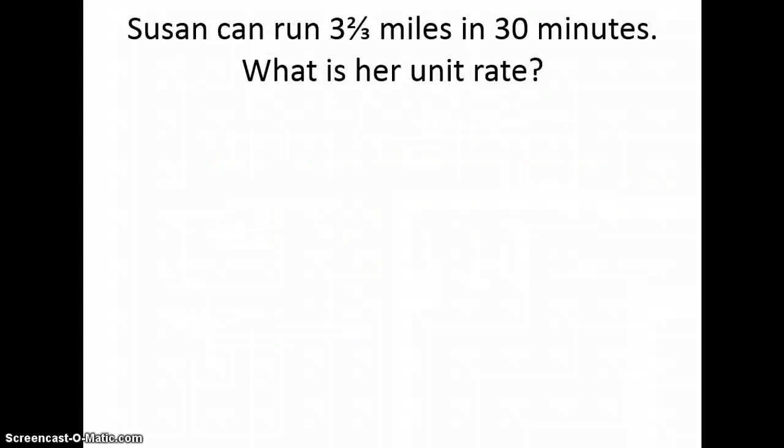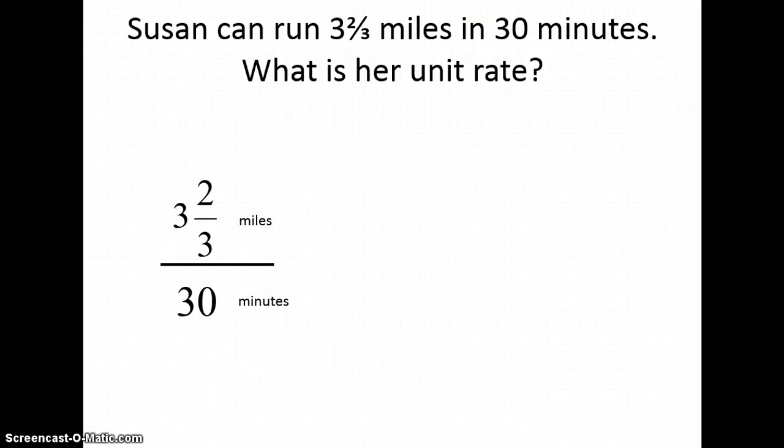Let's look at another example. Susan can run three and two-thirds miles in 30 minutes. What's her unit rate? We're comparing miles to minutes. So, since miles comes first in the problem, I'm going to put miles on top in my ratio, which means I'm really looking for how many miles she can run in one minute.